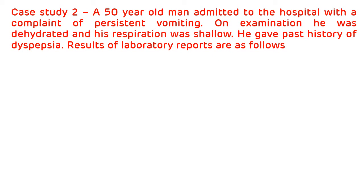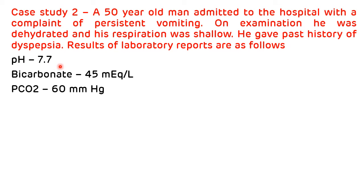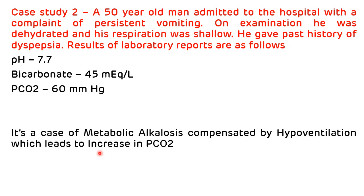Case study 2: A 50-year-old man admitted with persistent vomiting. On examination he was dehydrated, respiration was shallow, and he gave a past history of dyspepsia. Lab results: pH is 7.7 — increased, so it is alkalosis. Bicarbonate is 45 mEq/L — also increased. PCO2 is 60 mmHg — also increased. pH and bicarbonate are moving in the same direction, so this is metabolic alkalosis compensated by hypoventilation, which leads to retention of CO2 and an elevated PCO2.